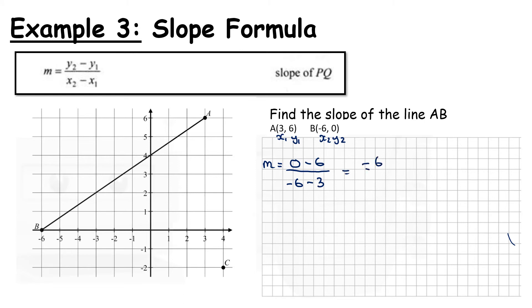And that becomes minus 6 over minus 9. And you always want to simplify this down as much as possible. So minus 3 divides into the top 2 times and minus 3 divides into the bottom 3 times. Or you can think of a minus divided by a minus will give us a plus. So the slope in this case is 2 over 3.